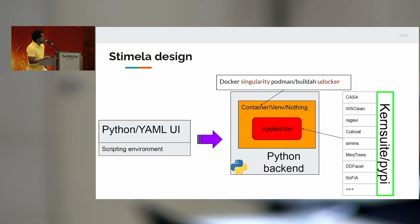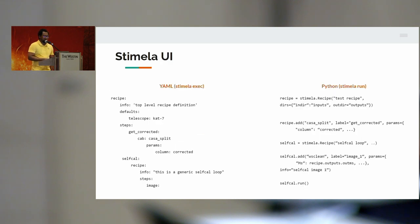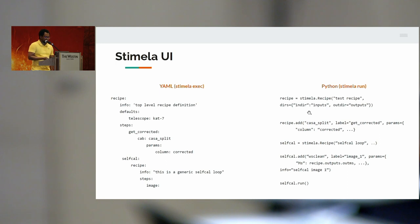This is the design of Stimela. You can have any tool that you want — usually we get these tools from either PyPI or CARTAsuites — and then we wrap them up in containers, or we can put them in a virtual environment, or you don't have to have any wrapper. We have a Python backend which gives you access to all the tools in a simplified, unified interface. This is where you do your scripting. Here are two simple examples — one using both the YAML and the Python interface — a fictitious self-cal loop where you calibrate and then image. Running it in Python uses stimela run; in YAML, stimela exec.